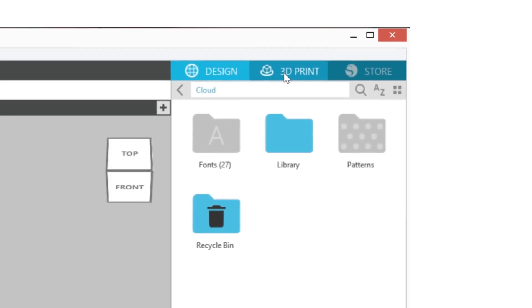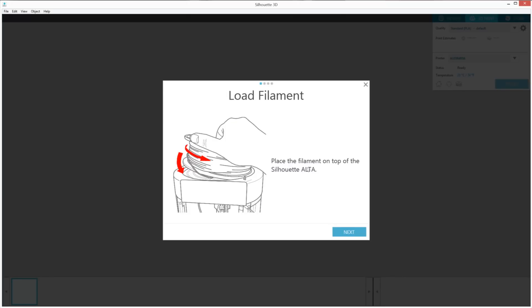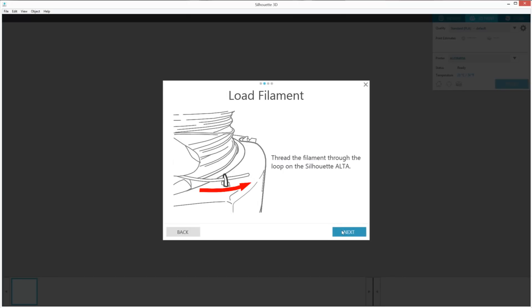In the software, click on the 3D print tab. In the upper right-hand corner, ensure that your machine has been selected. With the Alta selected, click on the filament button. Next, click on Load Filament and go through the following steps to load your filament properly.